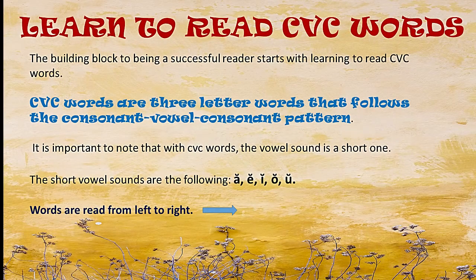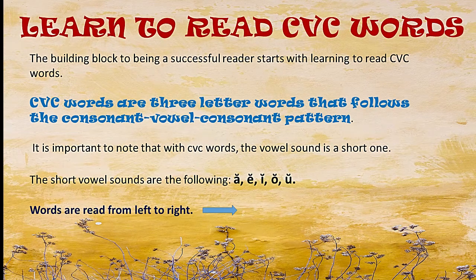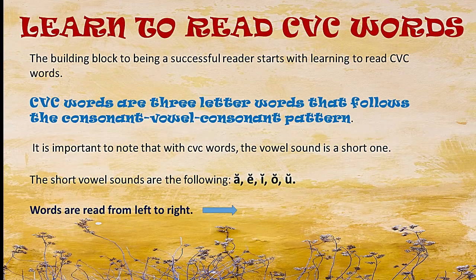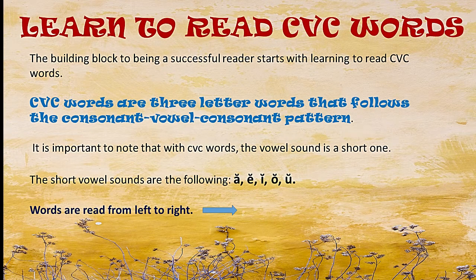The key to successful reading is learning how to read CVC words. CVC words are three-letter words that follow the consonant-vowel-consonant pattern. We first learn the letter sounds, then we move to learning how to blend two-letter words and sounds. CVC words are easy to read because one gets to hear each letter sound. In CVC words, note that the vowel sound is a short one.